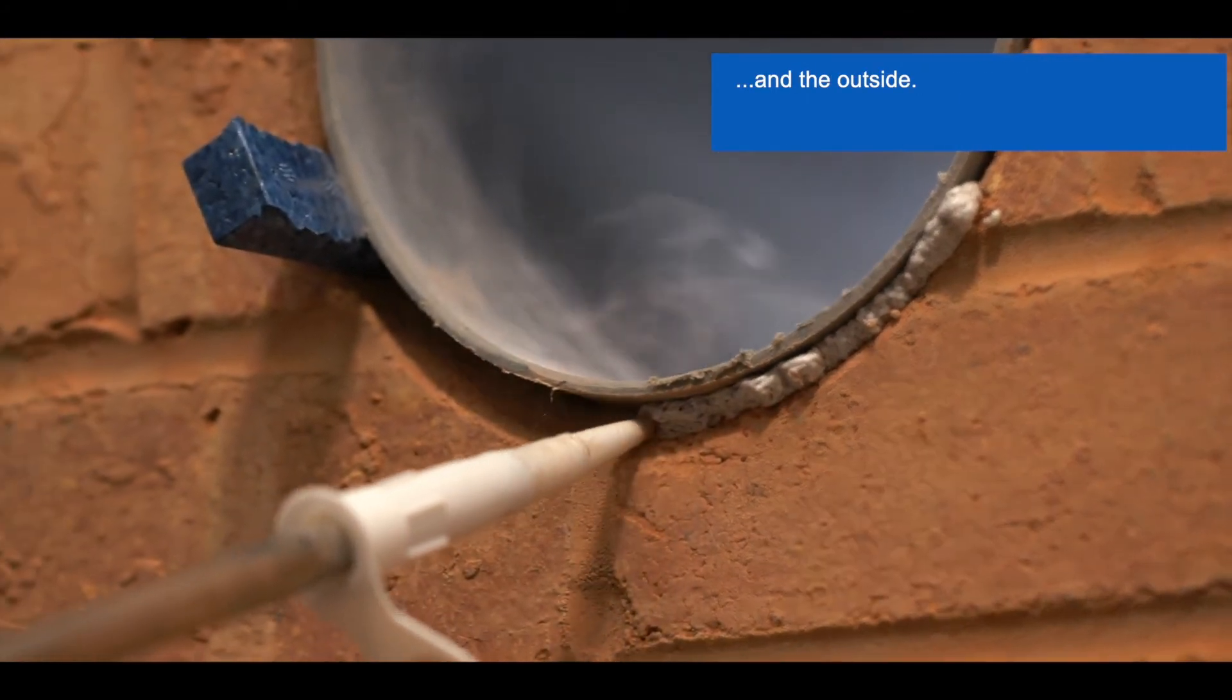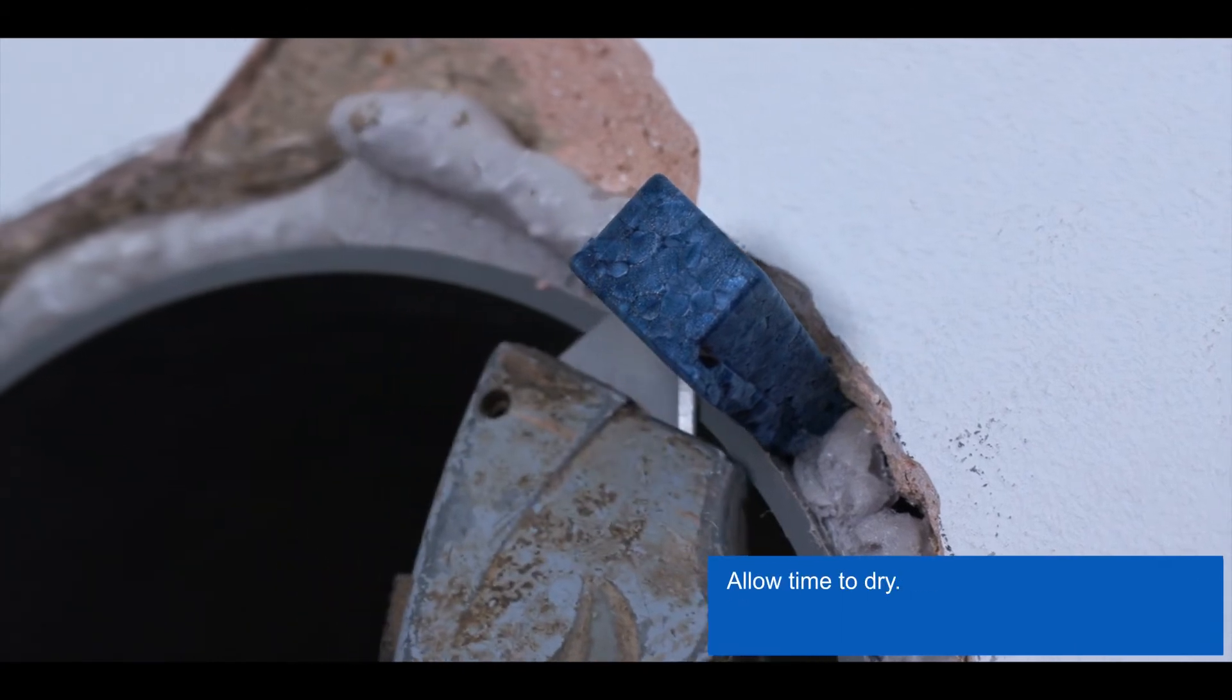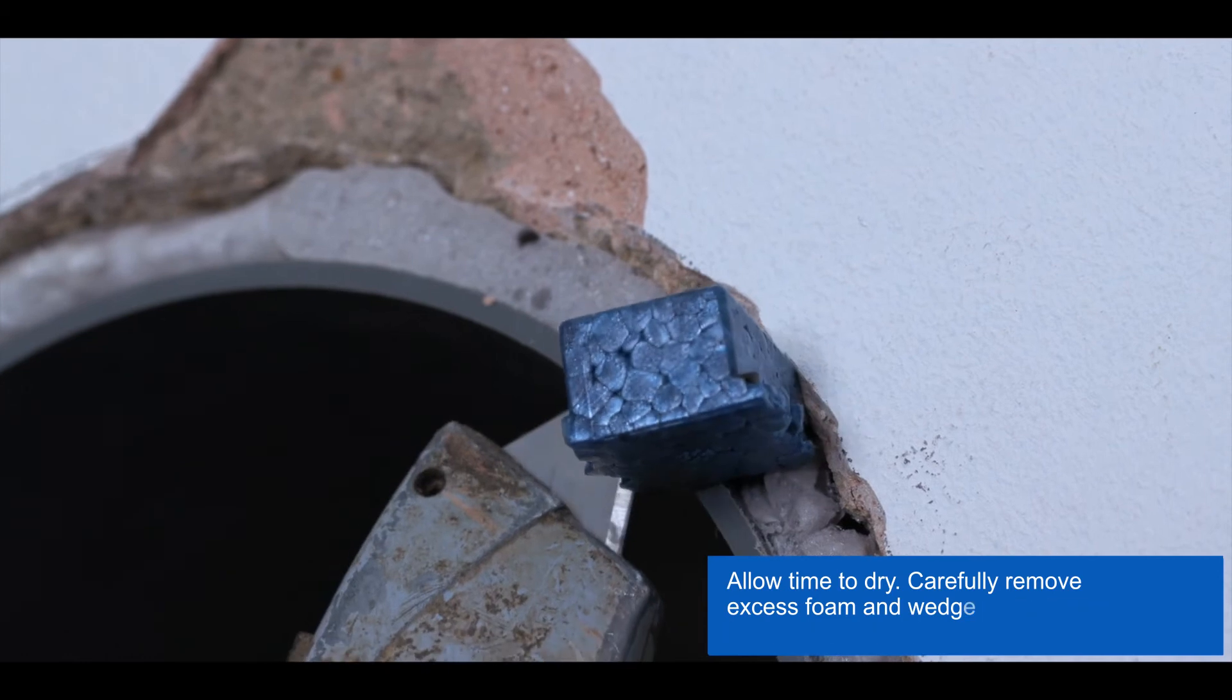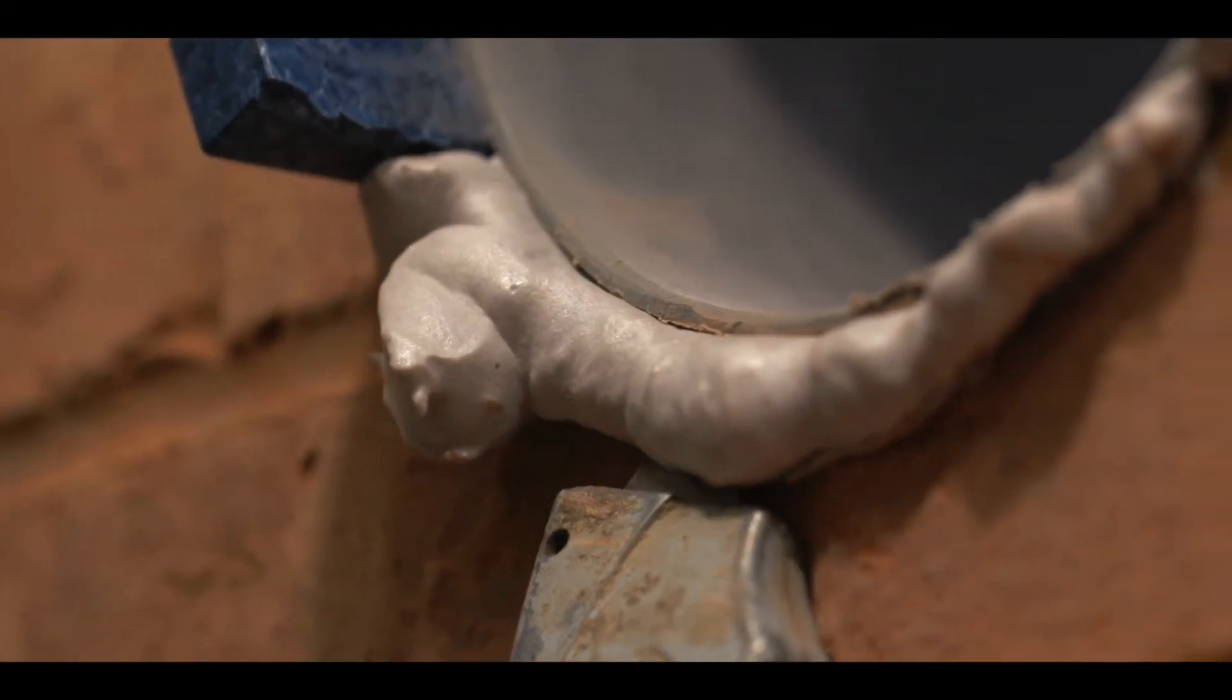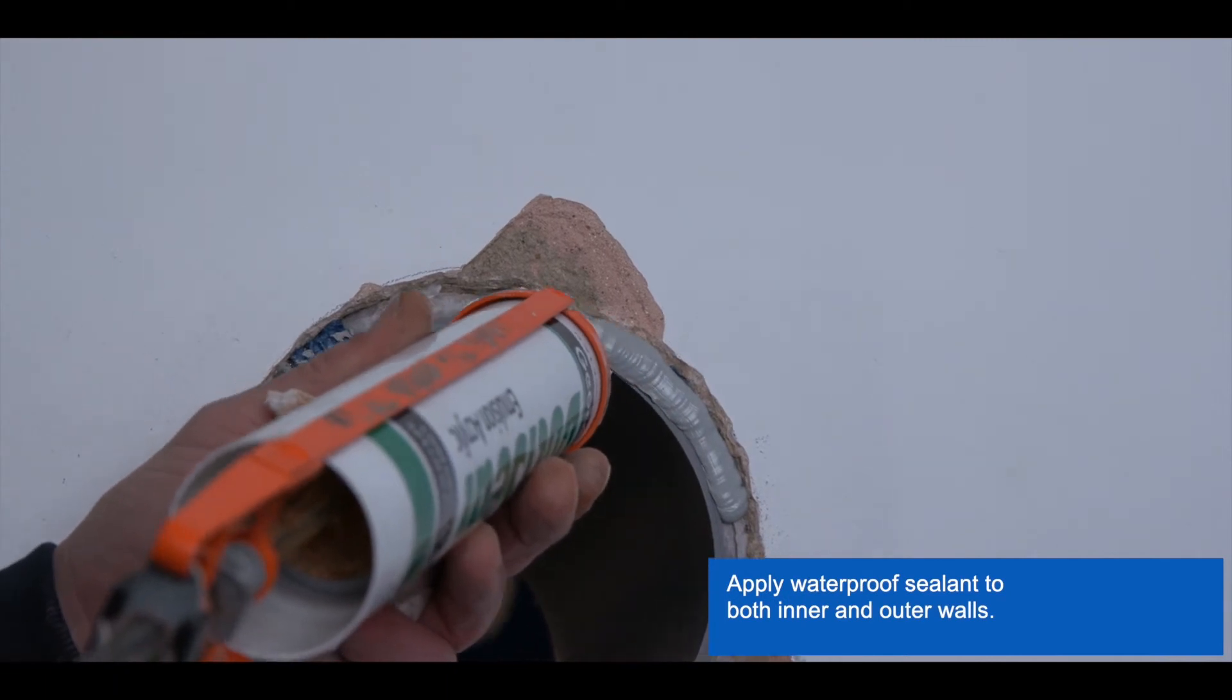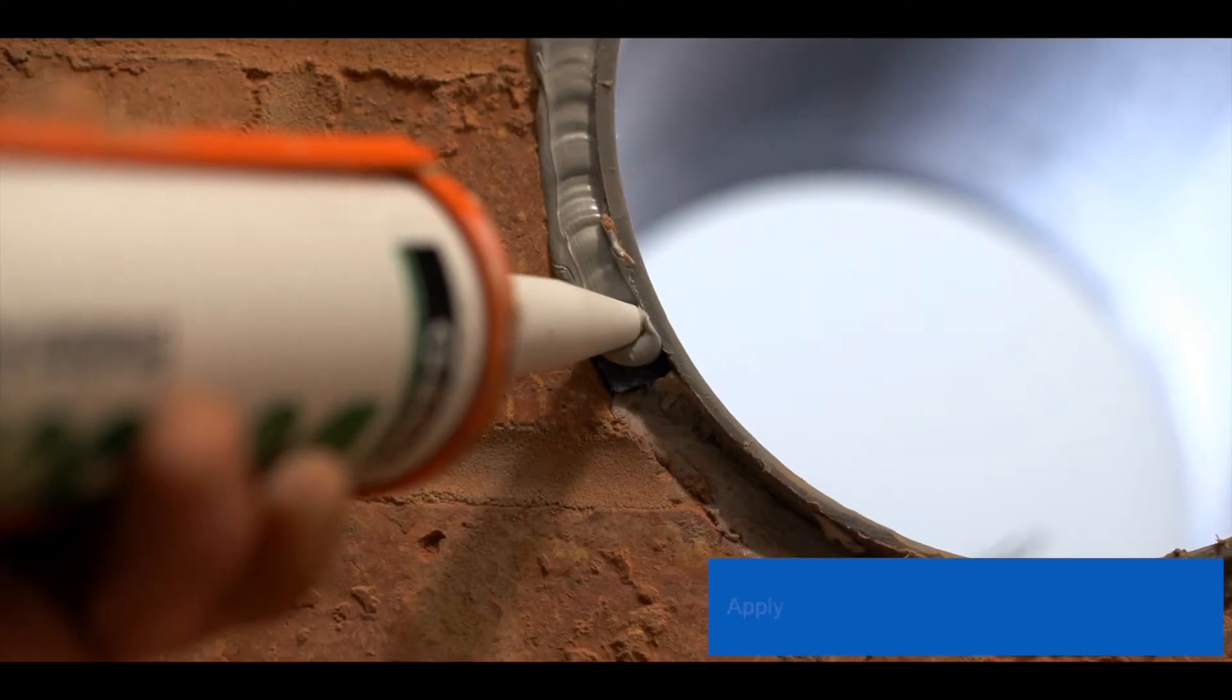Allow time to dry and set, then carefully cut away the excess foam and wedges to ensure a flush finish with the wall on both inner and outer walls. Apply a waterproof sealant in the gap between the sleeve foam and wall.